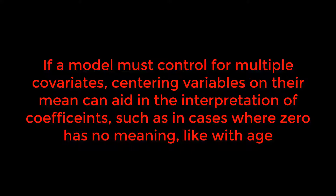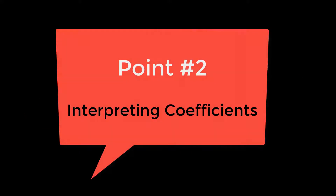An age of zero wouldn't mean anything in this model, but centering on the average age of the group, such as 22, might make more sense when interpreting the coefficient. This brings us to our next point: interpreting coefficients.